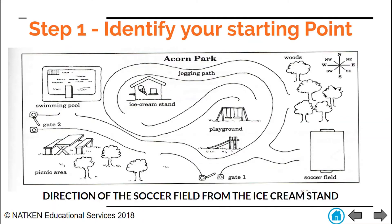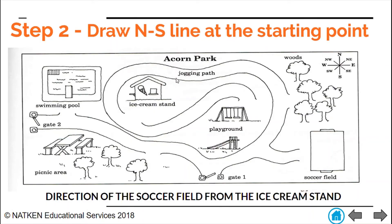So our first step would be to identify our starting point — the ice cream stand, where we are going to be starting from. Once we've identified our starting point, then we need to draw the north-south line at that point. Think back to the little girl standing in the center of the eight-point compass — that is pretty much what we're doing here. We're drawing our north-south line at the starting point, right there at where we're starting.